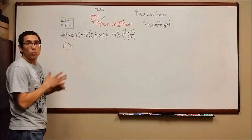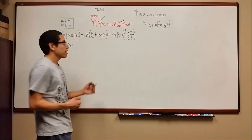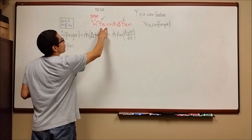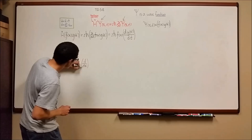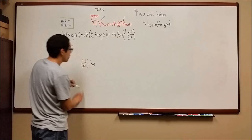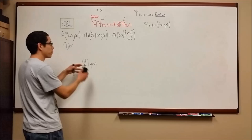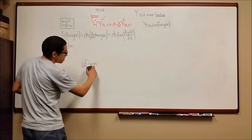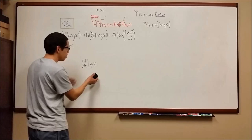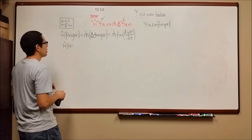Operators are a set of rules — a set of tasks given to whatever function they are applied to, meaning whatever function is on their right side. Taking the derivative with respect to x is an operator: when you apply it to f of x, you're performing processes on that function to give you something different — namely the derivative. So d over dx is an operator, and when an operator acts on a function, it makes it something different.